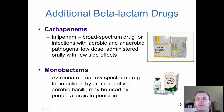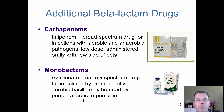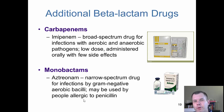Some other beta-lactam rings are the carbapenems - broad spectrum drugs. The monobactams are another one - more narrow spectrum for gram-negative aerobic bacilli, used for people with allergies to penicillin. So if you have penicillin allergies, you'll probably get a different type of drug that does very similar things without the side effects. The reason they always go to amoxicillin first is because it's very cheap and easy to give without causing lots of problems, unless you're allergic.